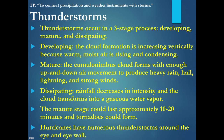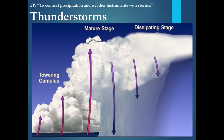In the mature stage, the cumulonimbus cloud forms with a lot of up and down air movement. We can have hail, strong winds, and lightning. In the dissipating stage, rainfall decreases and the extent of the cumulonimbus cloud gets smaller. A thunderstorm can last for 10 to 20 minutes. Tornadoes can also form from these thunderstorms because of the cumulonimbus clouds. Hurricanes also have numerous thunderstorms around the eye wall. The cloud begins as a towering cumulus, develops into a large anvil-shaped cumulonimbus cloud, and then eventually dissipates, and the thunderstorm diminishes.